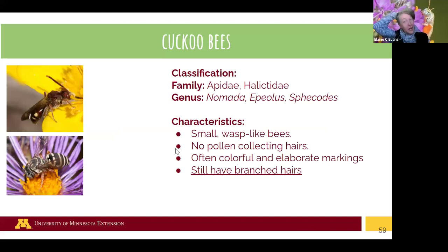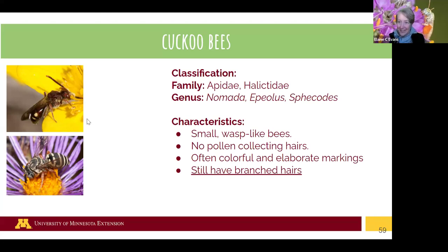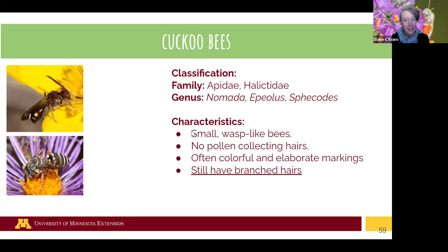A really cool group of bees are the cuckoo bees — these are bees that don't make their own nests. They go in and take over nests of other bees. They often look more wasp-like but can be really colorful. They're handy for finding nests of other bees because they'll be flying around zooming into nests. Nomada cuckoo bees in particular like to go after the mining bees (Andrena), which are often active in spring.